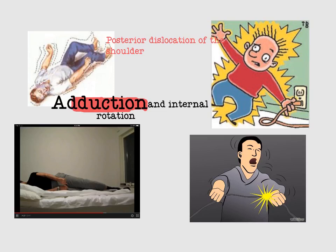In the previous video I talked about anterior dislocation of the shoulder. Now I'm talking about posterior dislocation of the shoulder. The mechanism of posterior dislocation of the shoulder is adduction and internal rotation, which will cause posterior dislocation of the shoulder.